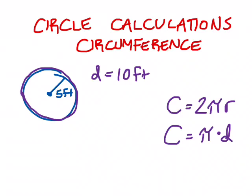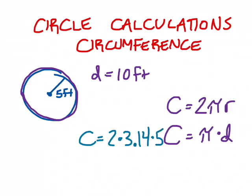Let's work with the 2 pi r formula. I'm looking for the circumference of a circle with a 5-foot radius. Circumference equals 2 times pi times r, which is 2 times 3.14 times 5. That gives me 31.4. So with a radius of 5 feet, the circumference is about 31.4 feet around the outside of the circle. And that's how we find circumference.